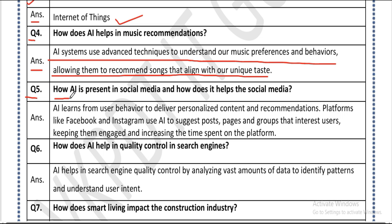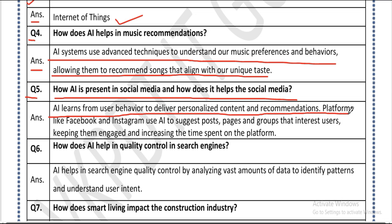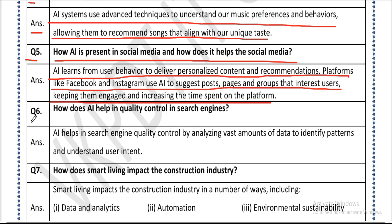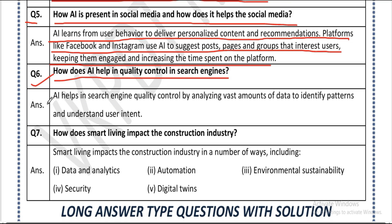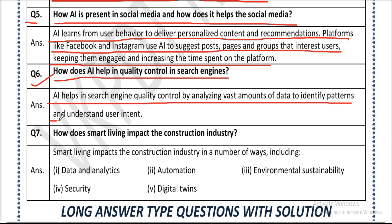Question five: how is AI present in social media and how does it help? Answer: AI learns from user behavior to deliver personalized content and recommendations. Platforms like Facebook and Instagram use AI to suggest posts, pages, and groups that interest users, keeping them engaged and increasing the time spent on the platform. Question six: how does AI help in quality control in search engines? Answer: AI helps in search engine quality control by analyzing vast amounts of data to identify patterns and understand user intent.